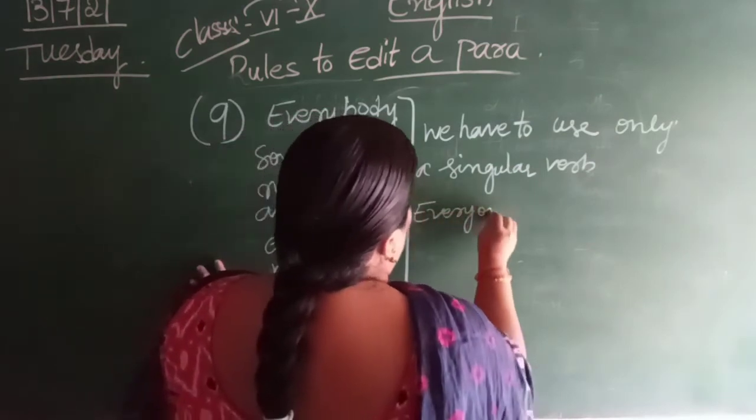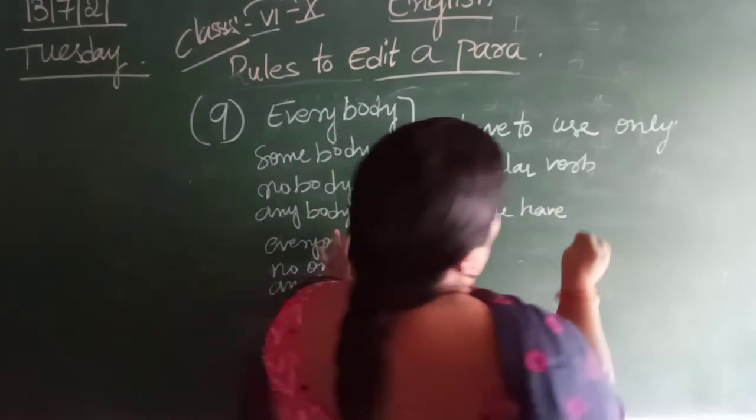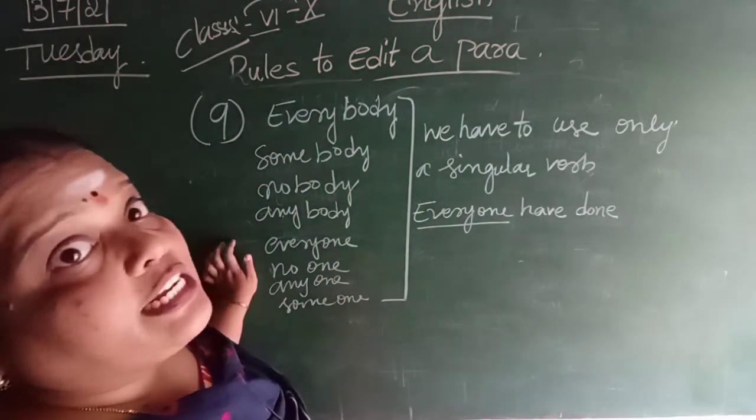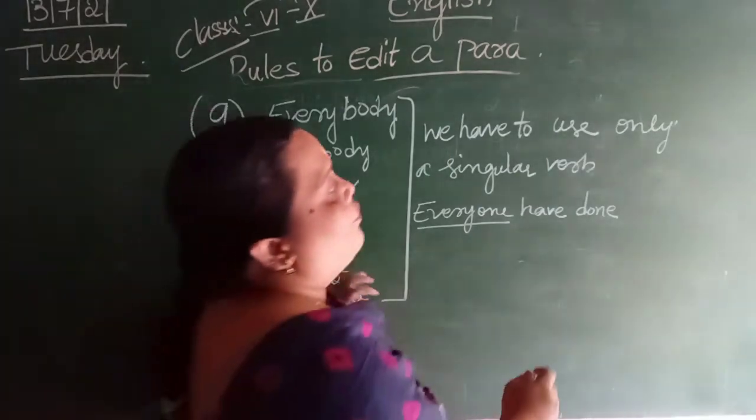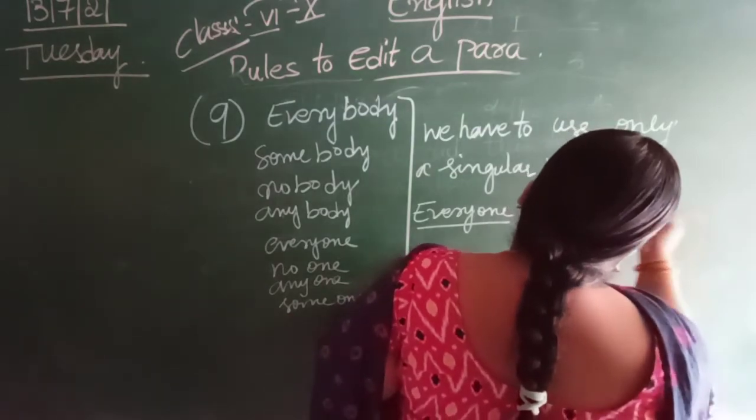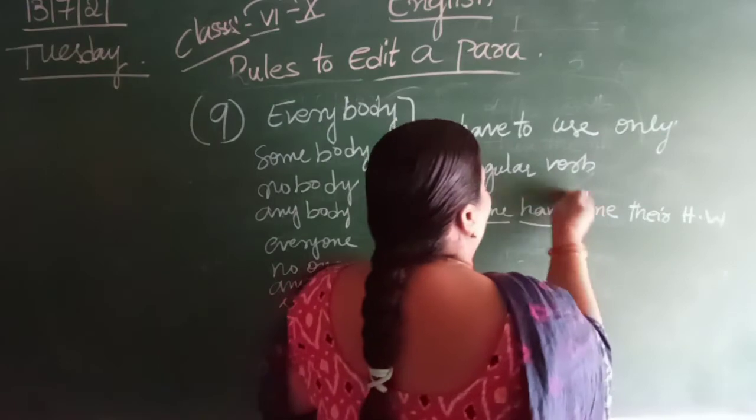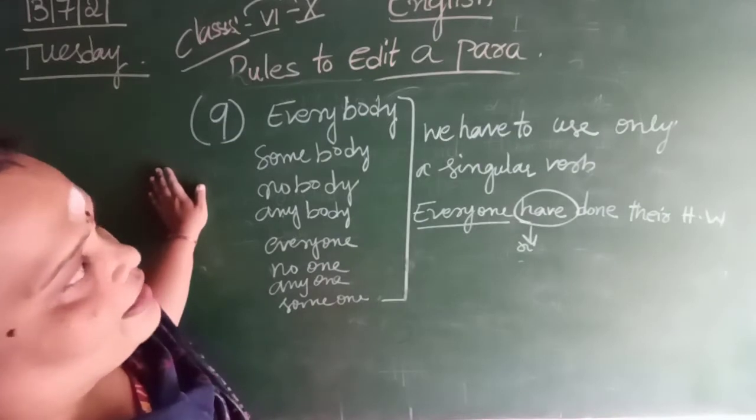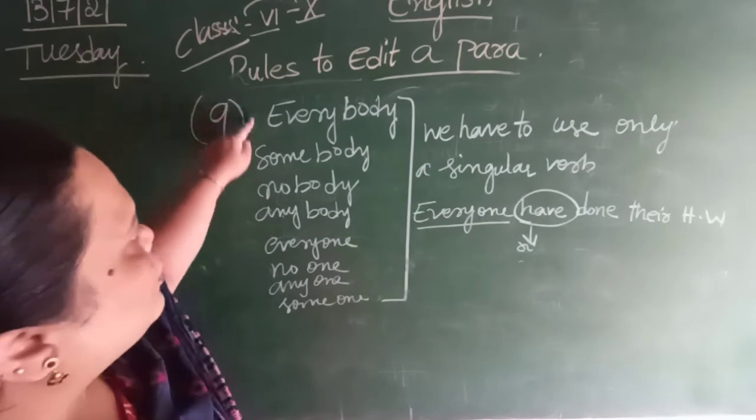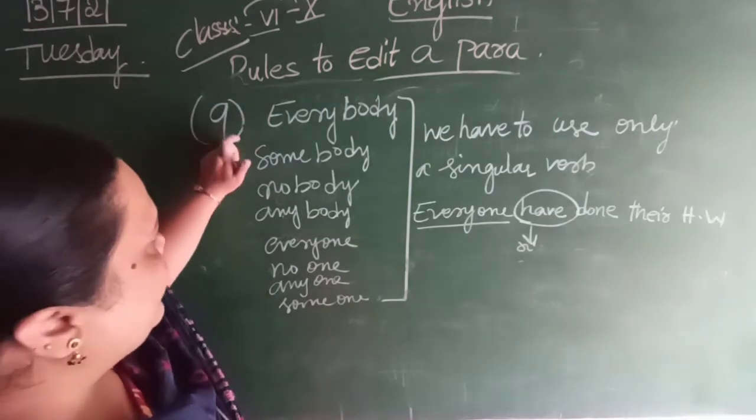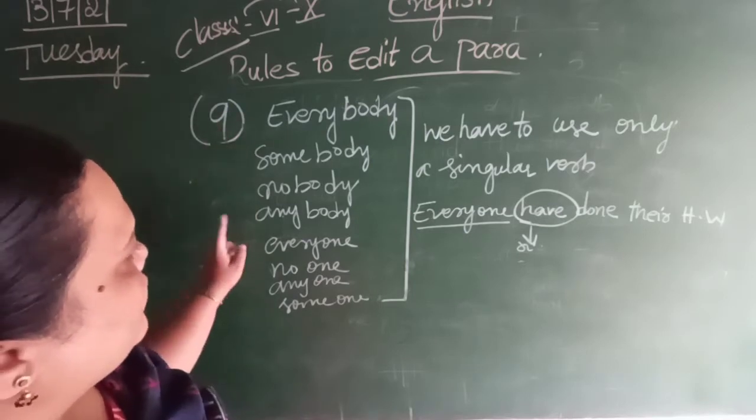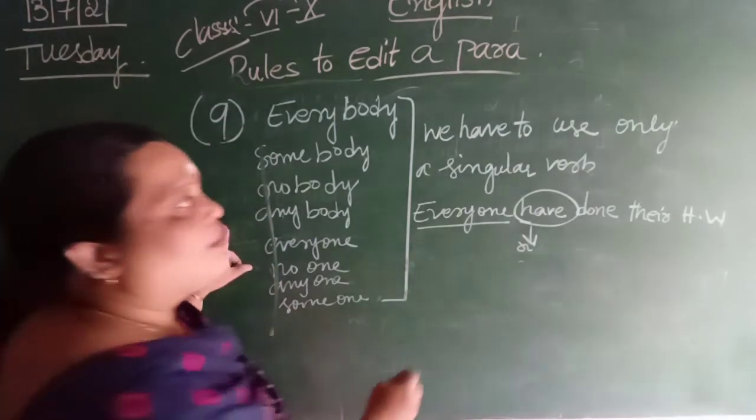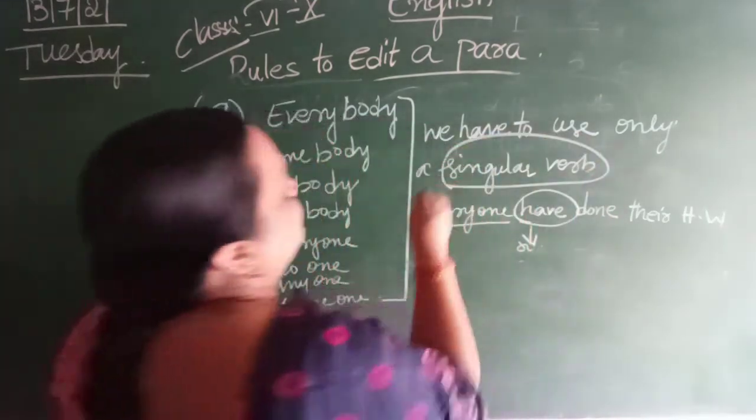Everyone have. Everyone have done. Everyone we are pointing out each and everyones. Everyone have done. Okay, their homework. Okay have. How is the singular word? Okay singular work. So what we have to keep here in mind is whenever we were being given out of this any word in a sentence, if we were being given any word from this like everybody somebody nobody anybody everyone no one anyone someone, it should be a singular verb. Okay.